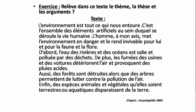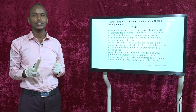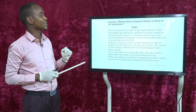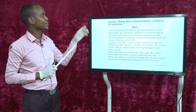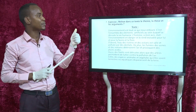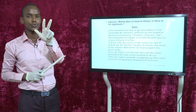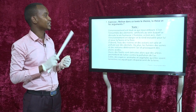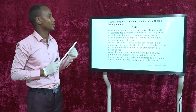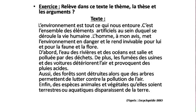Chers élèves, prenez votre cahier et vos stylos. Ce matin, je vous demande de relever dans le texte : le thème, la thèse et les arguments. Avant de commencer, lisons ensemble le texte. « L'environnement et tout ce qui nous entoure, c'est l'ensemble des éléments artificiels au sein duquel se déroule la vie humaine. L'homme, à mon avis, met l'environnement en danger et le rend invivable pour lui et pour la faune et la flore. »